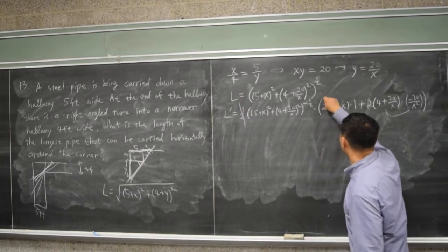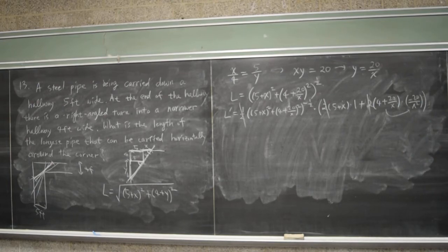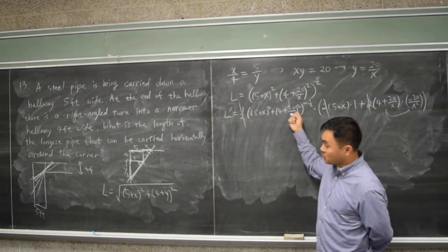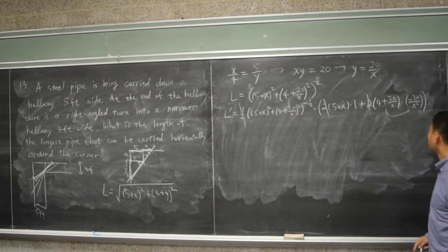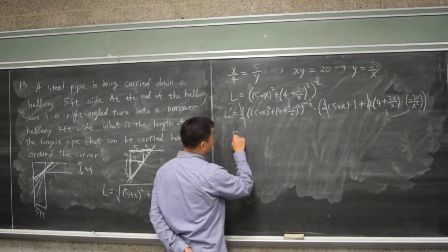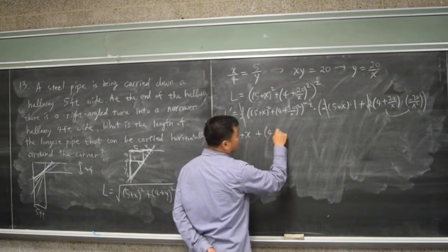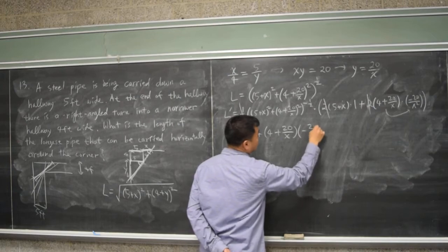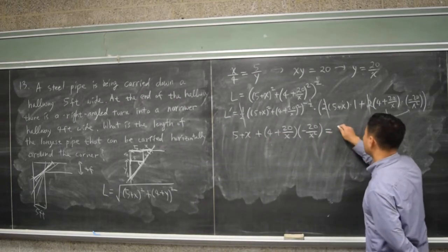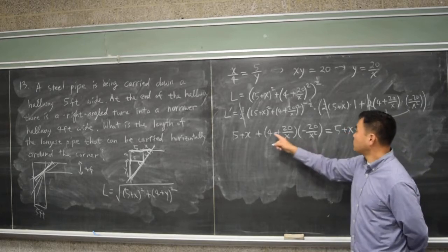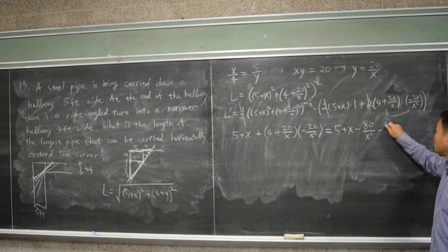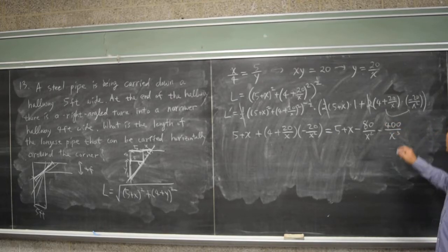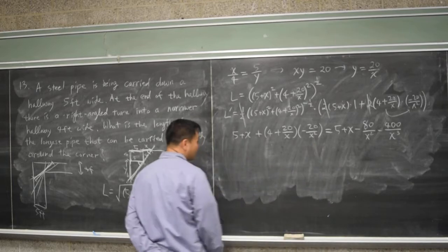The one-half cancels with the two's. Also, this square-root factor can never be zero since x is positive, so all those values are positive. We end up needing to set the remaining expression equal to zero: five plus x minus four plus twenty over x times twenty over x squared equals zero. This simplifies to five plus x minus eighty over x squared minus four hundred over x cubed equals zero. And this will be solved using factor by grouping.